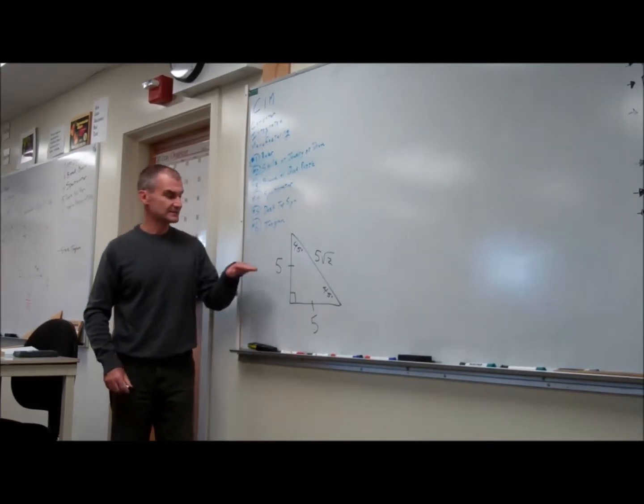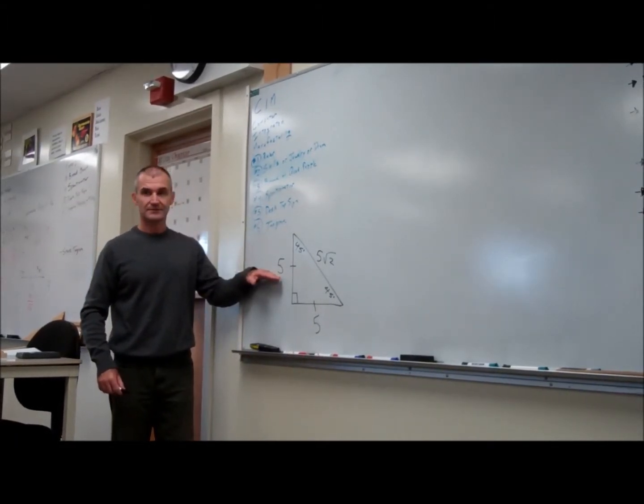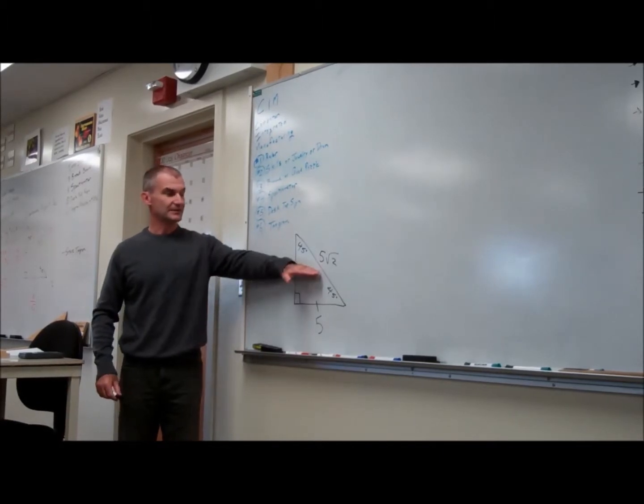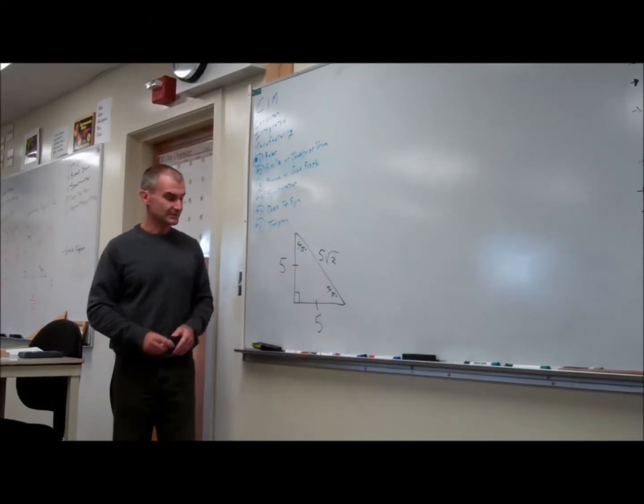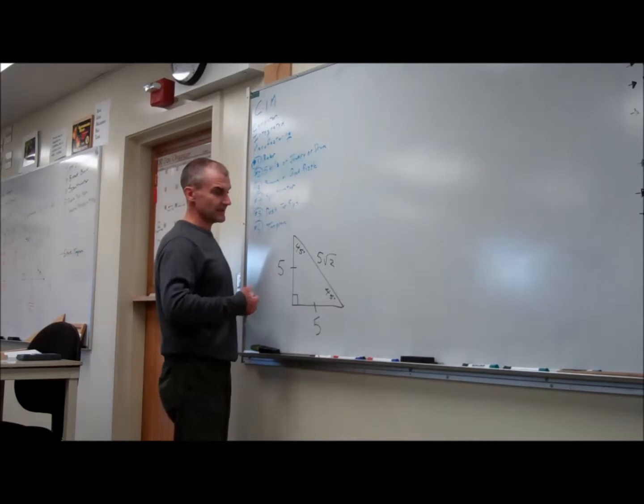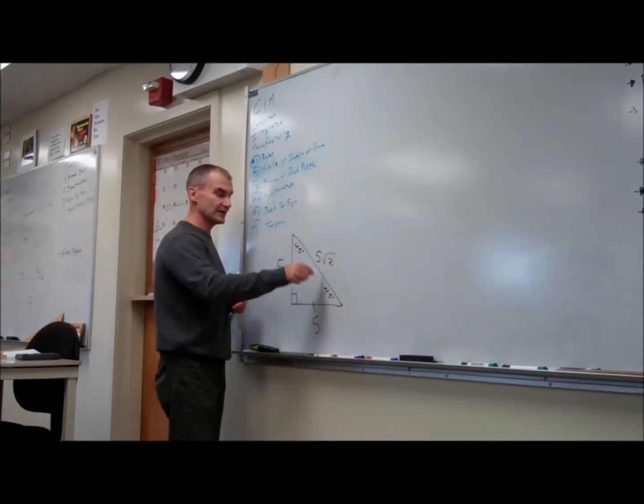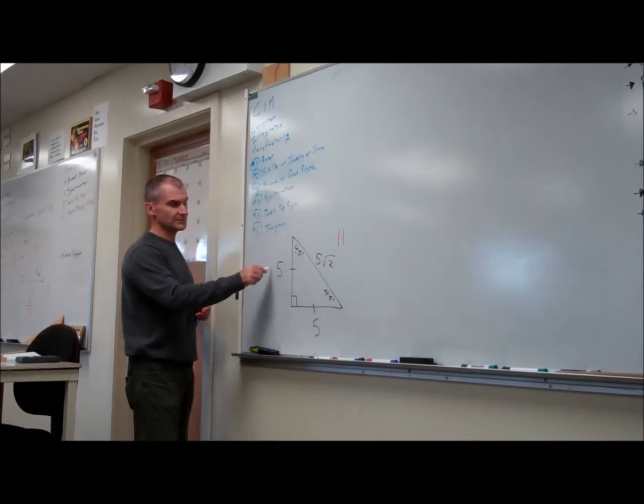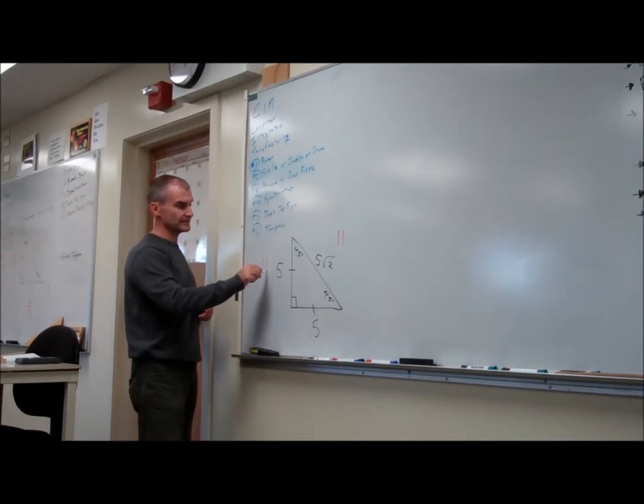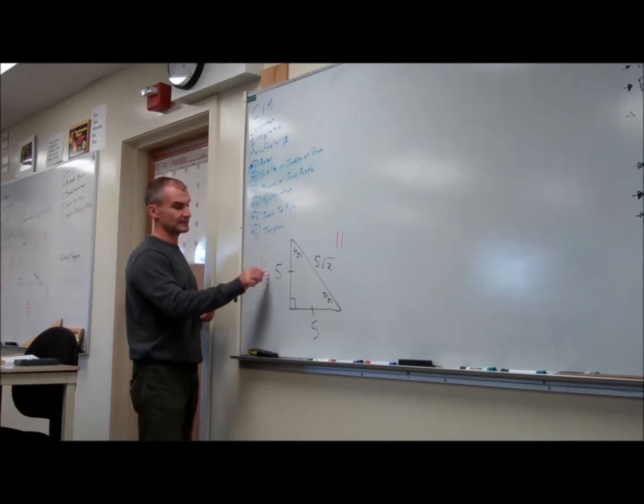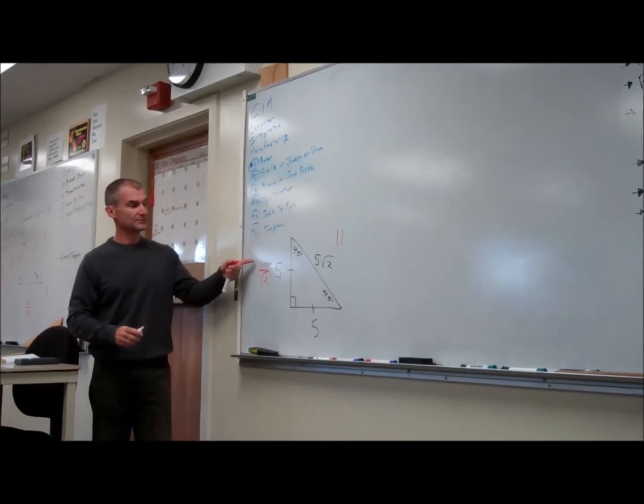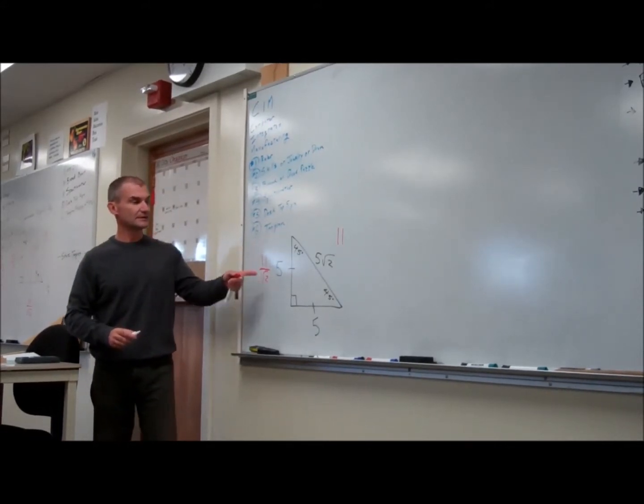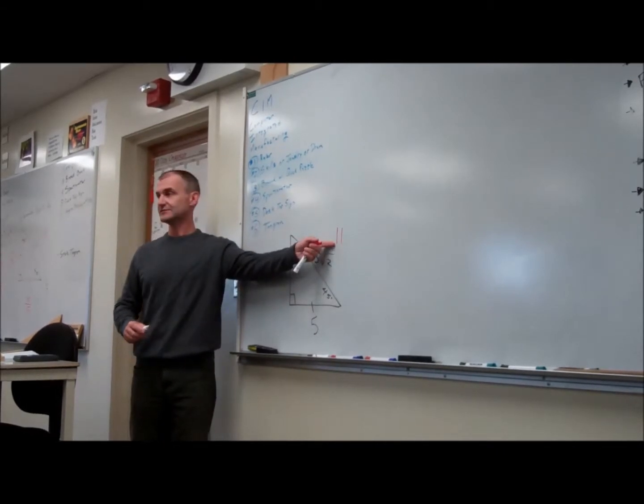But if this is nine, this is nine, and then this right here is nine root two. The other case is that if the hypotenuse right here is an integer like 11, this leg right here is going to be 11 divided by root two. Exactly, it's going to be 11 divided by root two. If it's 11 divided by root two times root two, it gives me the integer 11. So then, if this leg is 11 divided by root two, what's this leg right here? 11 divided by root two.